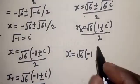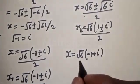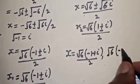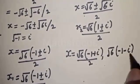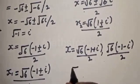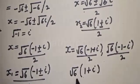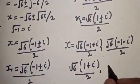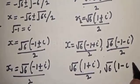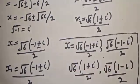Our final answers are: x equals root(6) times (minus 1 plus i) over 2, x equals root(6) times (minus 1 minus i) over 2, x equals root(6) times (1 plus i) over 2, and x equals root(6) times (1 minus i) over 2. These are the four values of x.